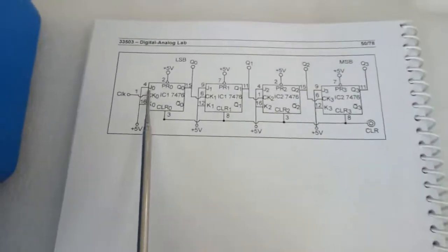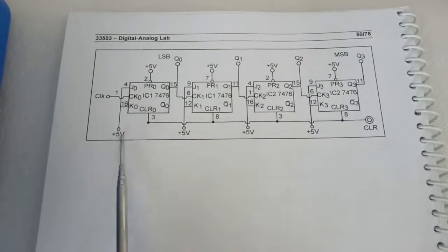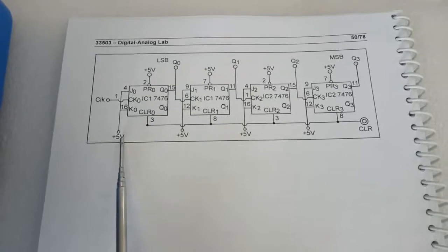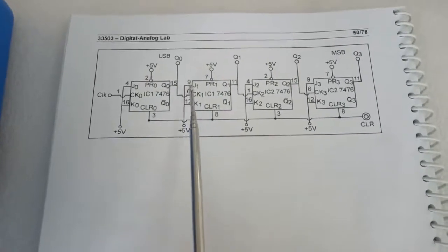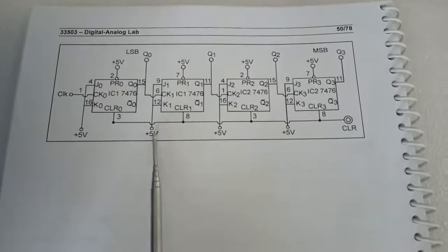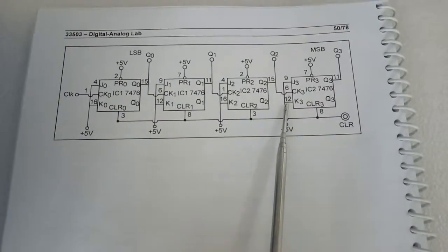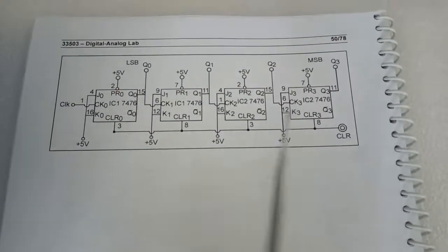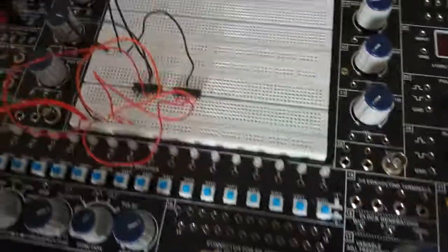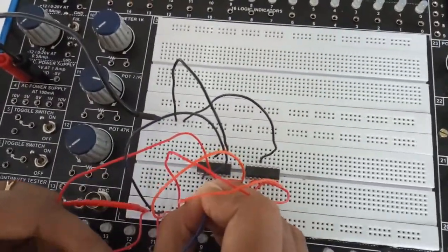Now we will short terminal 4 to 16 and connect it to plus 5 volt. Similarly, short terminal 9 to 12 and connect it to plus 5 volt. The same connections apply for the second IC. Connect 4 and 16 together, and connect 9 and 12 together for each IC.